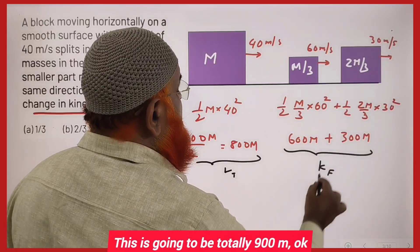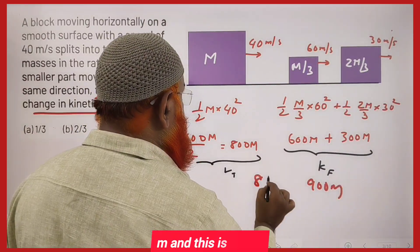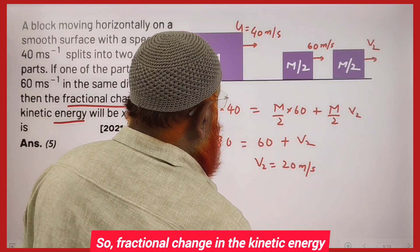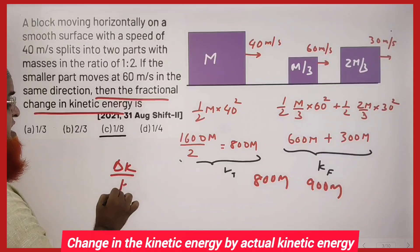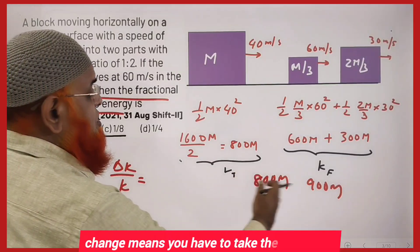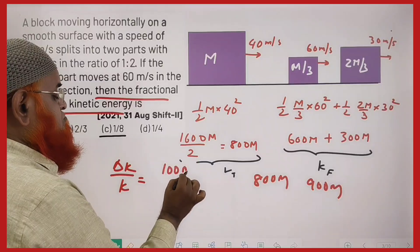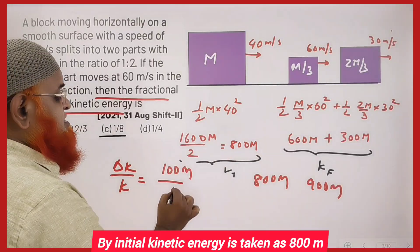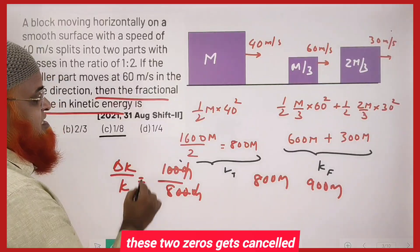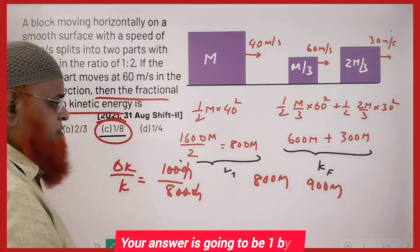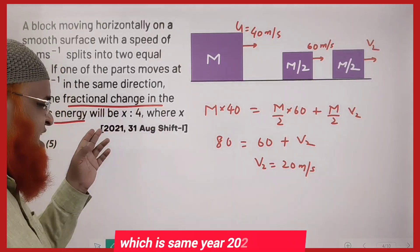After simplification, the total KE after splitting is 900M, and the initial KE was 800M. The fractional change in kinetic energy is (change in KE) / (initial KE) = (900M − 800M) / 800M = 100M / 800M = 1/8. So the answer is 1/8.